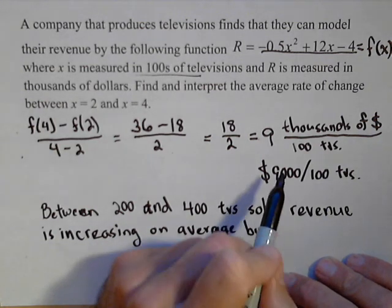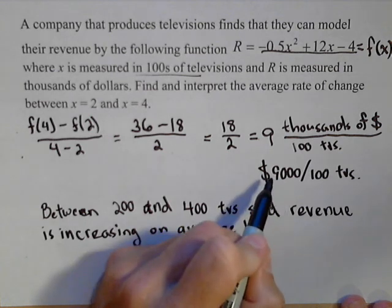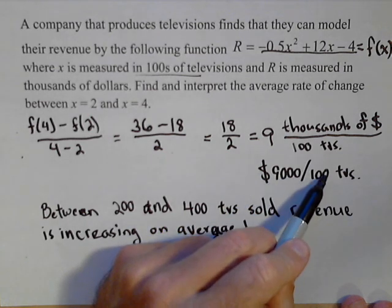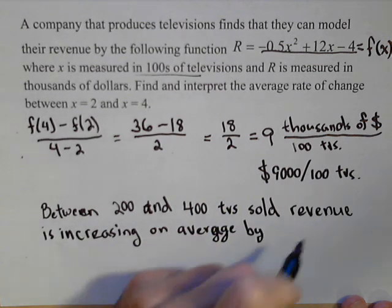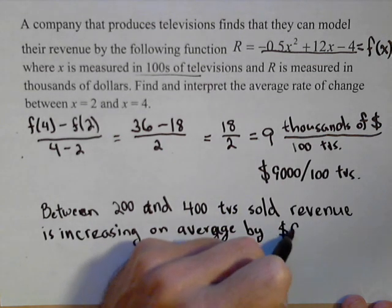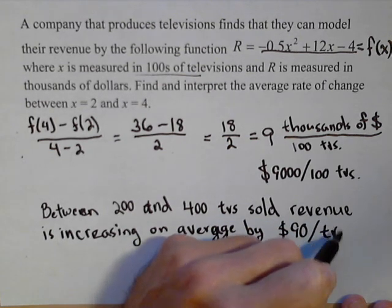Two ways you'll see this written. You might see $9,000 per 100 TVs. Or, we could actually cancel 100 out of the top and bottom. Revenue is increasing on average by $90 per television.